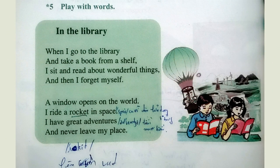Exercise 5: Play with Words, page 53. In the Library. When I go to the library and take a book from a shelf, I sit and read about wonderful things, and then I forget myself. A window opens on the world. I ride a rocket in space. I have great adventures and never leave my place.